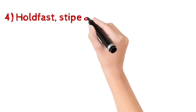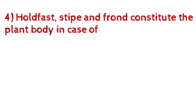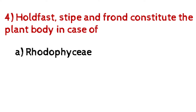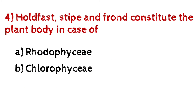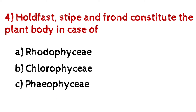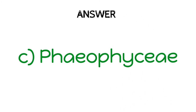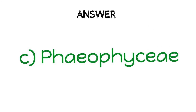Question number four: holdfast, stipe, and frond constitute the plant body in case of — A) Rhodophyceae, B) Chlorophyceae, C) Phaeophyceae, D) All of these. And the answer is C) Phaeophyceae.